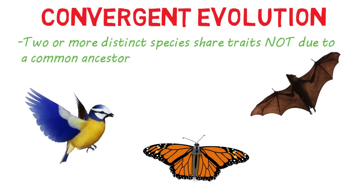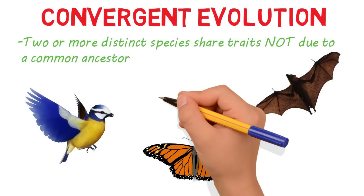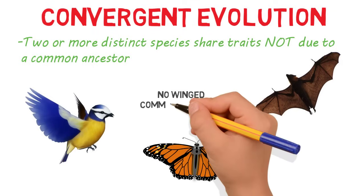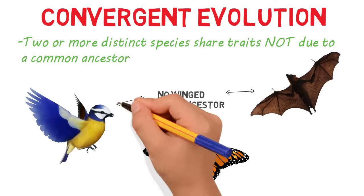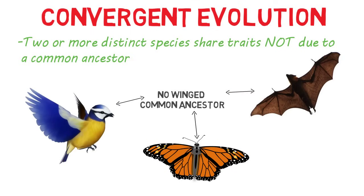All have wings that allow them to fly, but they don't share a common ancestor with wings. Each one evolved to have wings independently. Evolution converged on a similar trait in vastly different species — their wings are not due to a common ancestor.